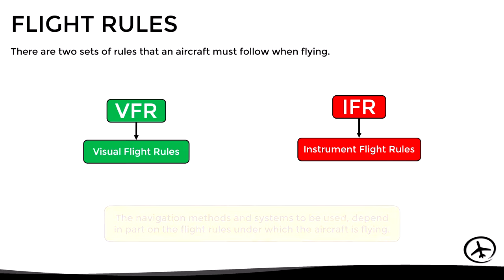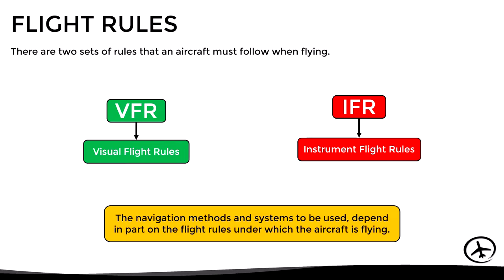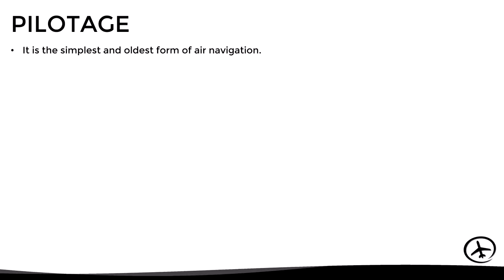The navigation methods and systems to be used during the flight will depend in part on the flight rules under which the aircraft is flying. Having seen these definitions and considerations, let's now look at the methods of air navigation, starting with pilotage. This is the simplest and oldest form of air navigation, and it is based on the observation of visual references to navigate.